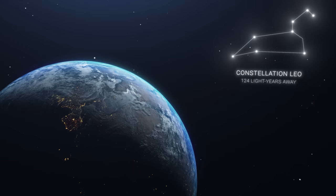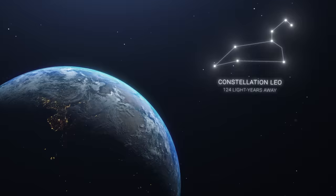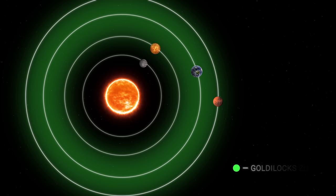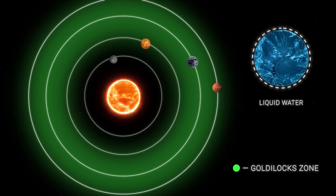Located 124 light-years away in the constellation Leo, this exoplanet is more than just a distant rock. You may have heard of the Goldilocks zone, a term describing the habitable zone around a star where conditions are ideal, neither too hot nor too cold, for liquid water to exist.